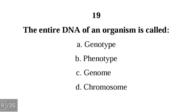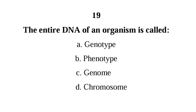Number nineteen: the entire DNA of an organism is called — genotype, phenotype, genome, or chromosome. The correct answer is C, genome. Genome refers to your entire DNA, both the regions that contain genes and the regions that do not contain genes.